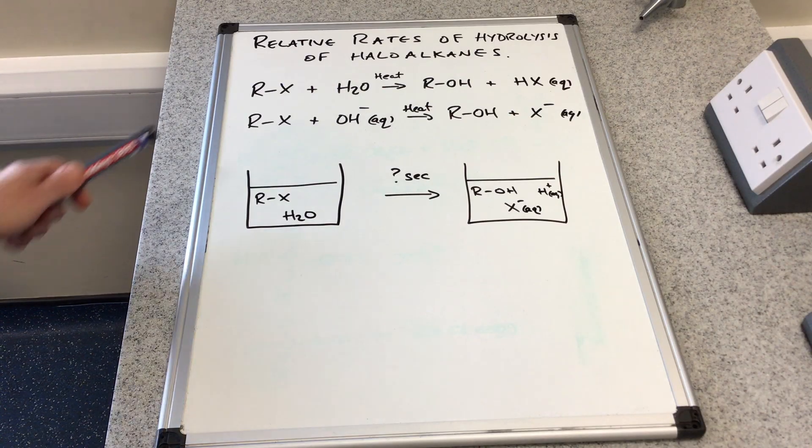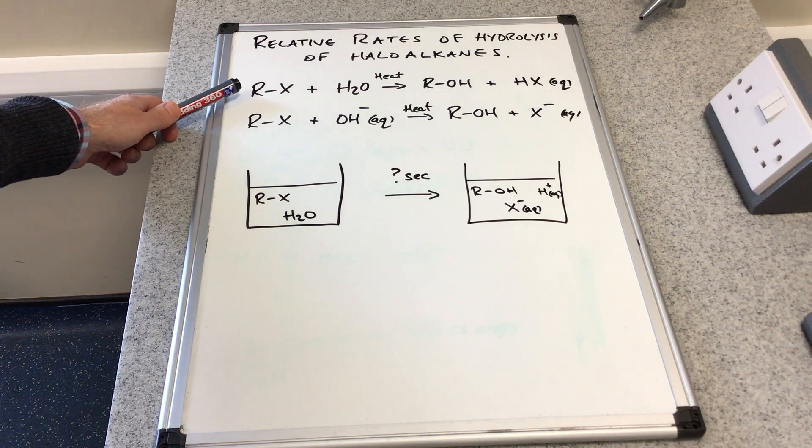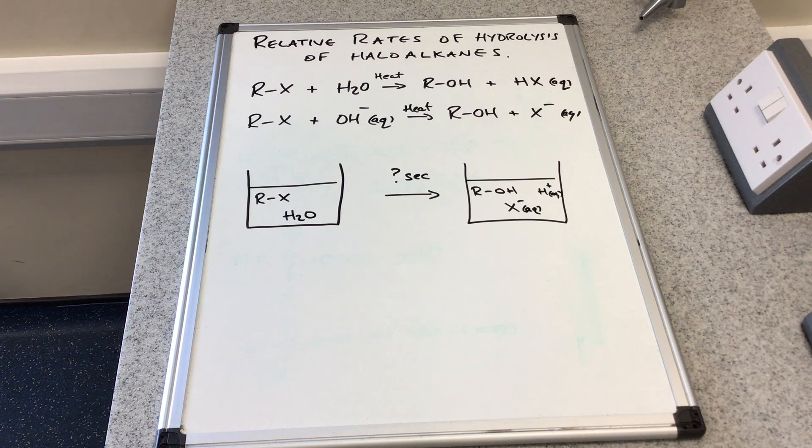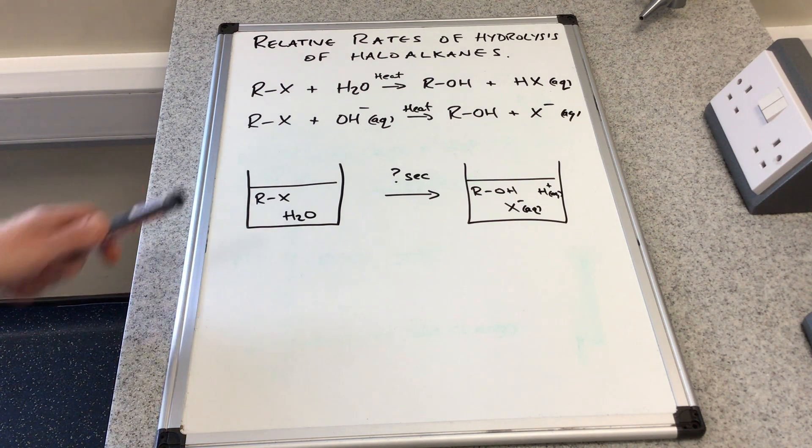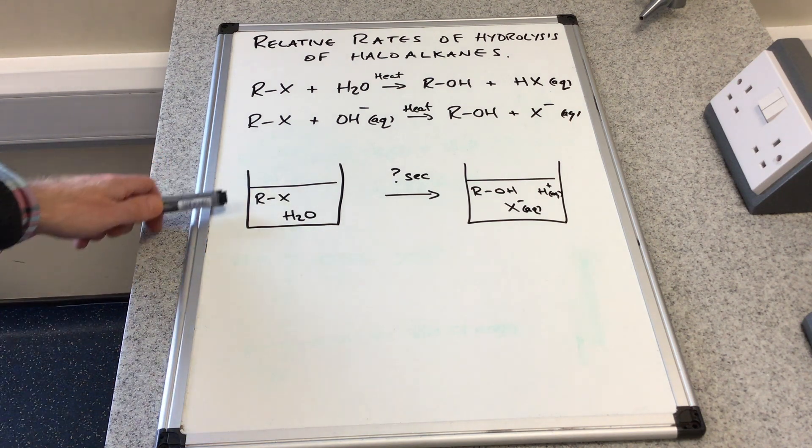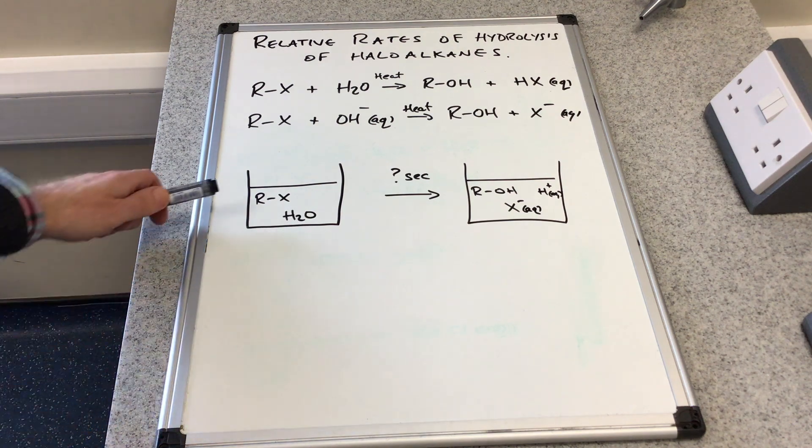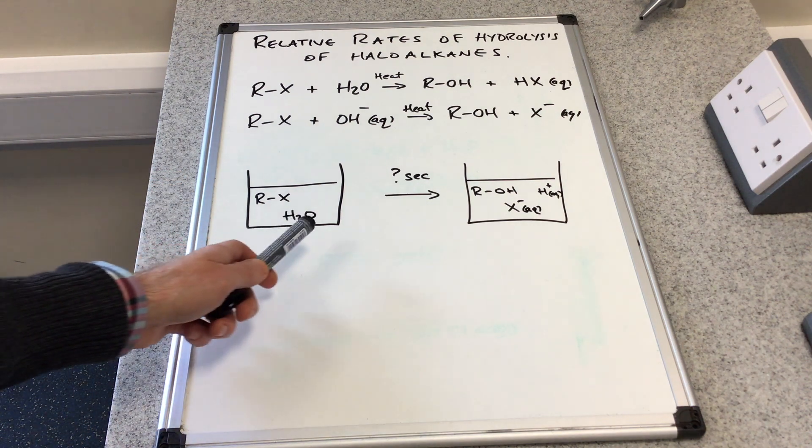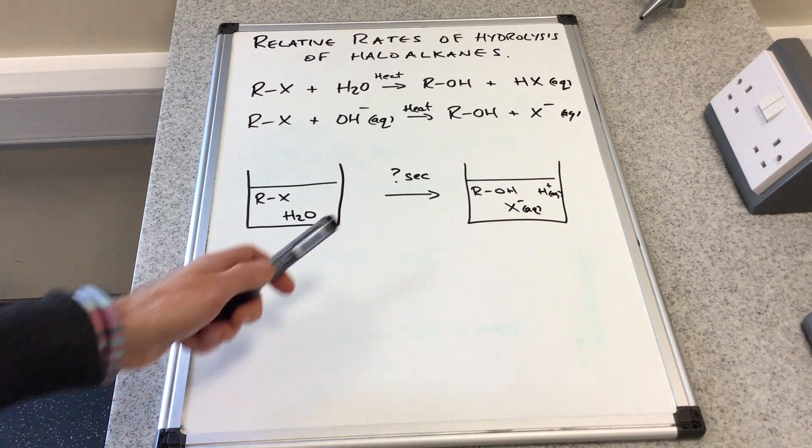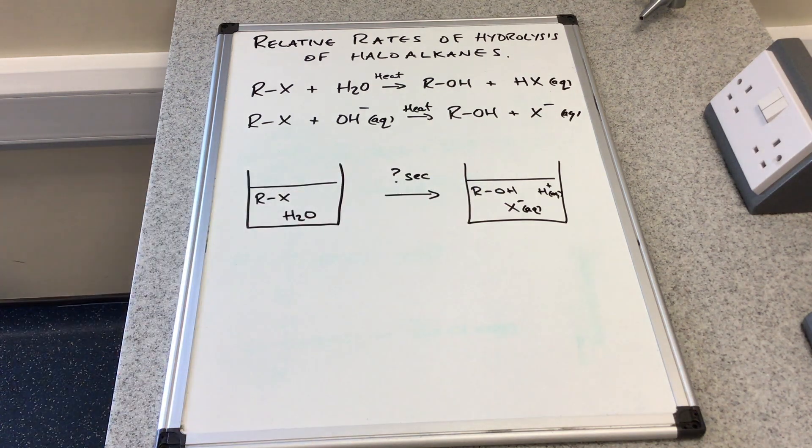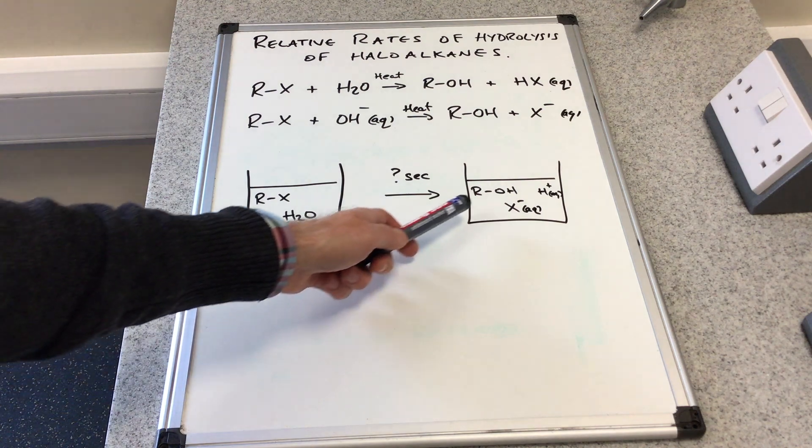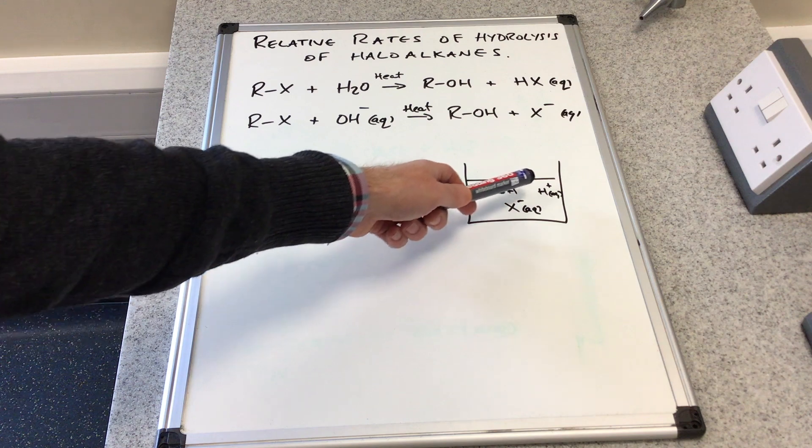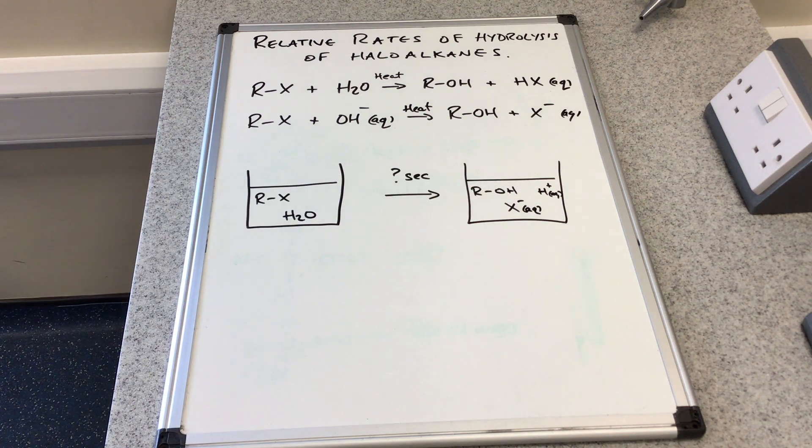If we focus on this method here where we use hot water to hydrolyze the haloalkane, at the start of the reaction we have haloalkane and water. At the end of the reaction we would have the alcohol, the aqueous halide ion, and H+ ion.